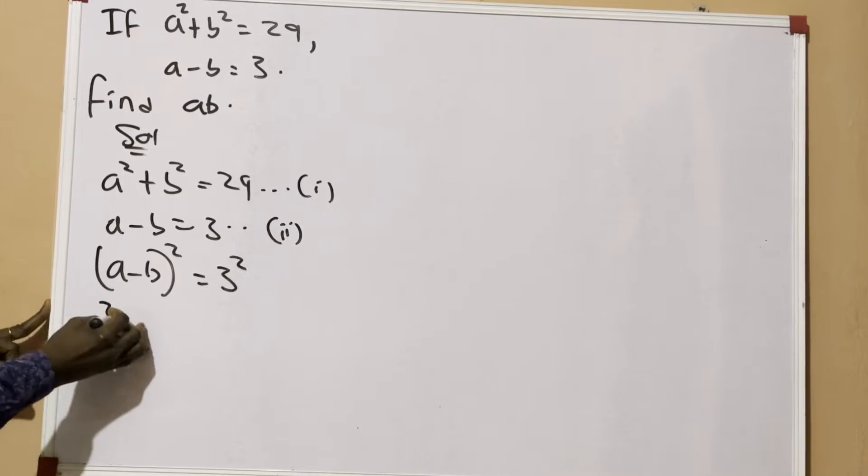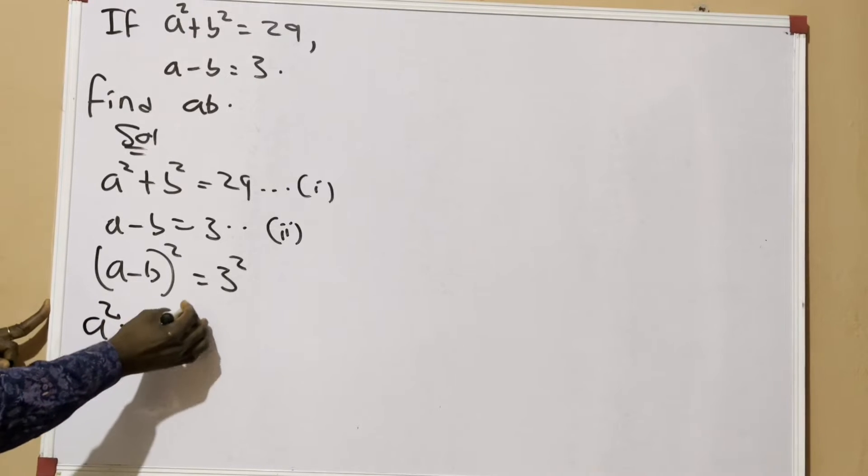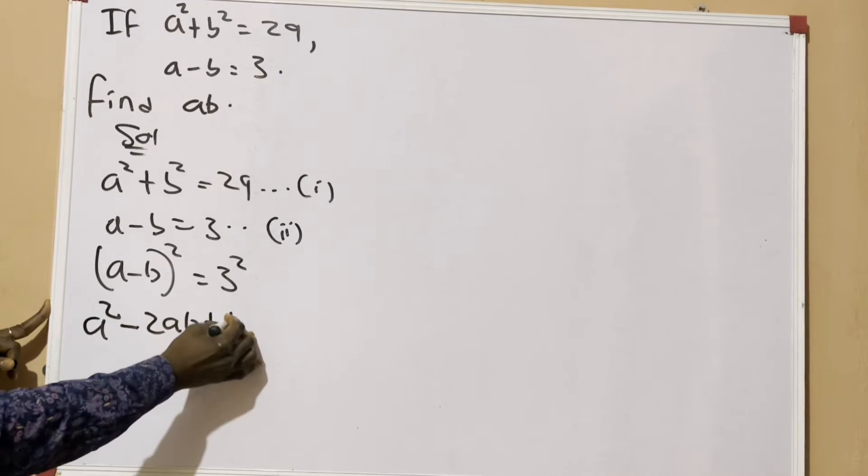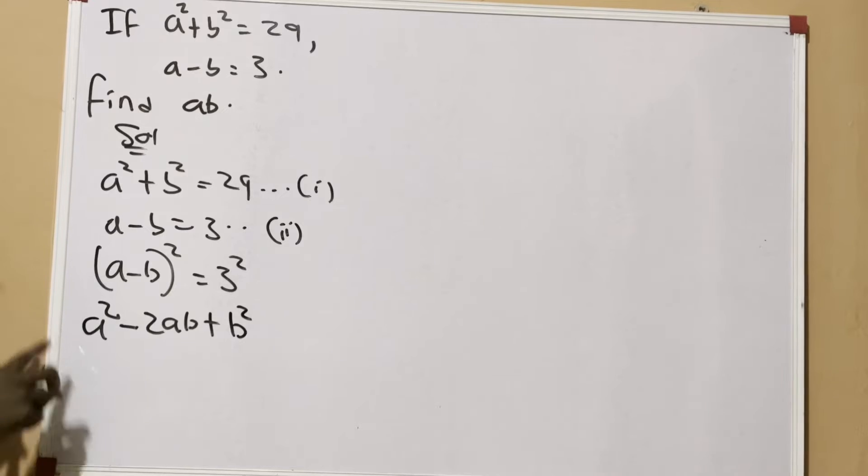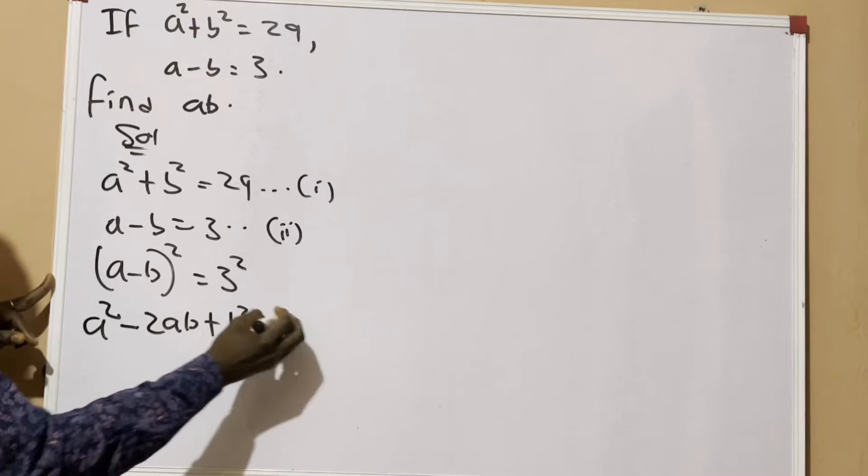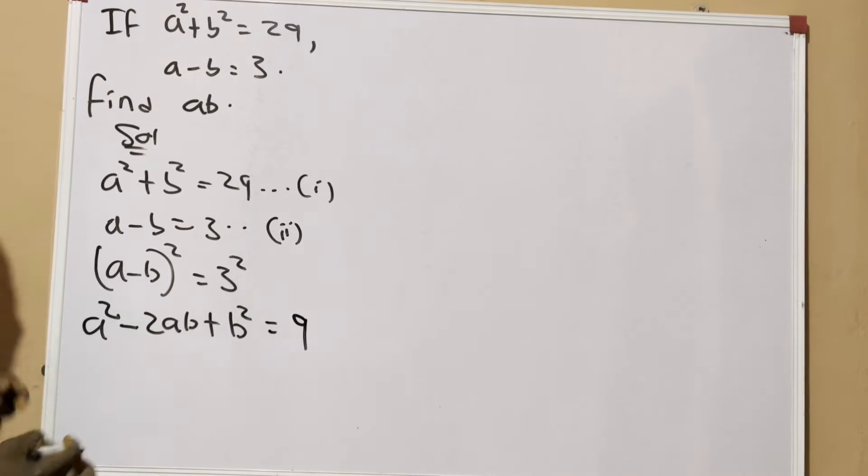...a² - 2ab + b² = 9. If we expand this, 3 raised to 2 equals 9. Most of you will be wondering how I got this so easily. I actually used Pascal's triangle in getting this.